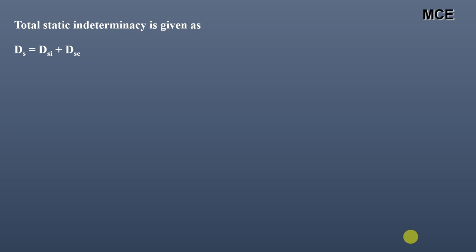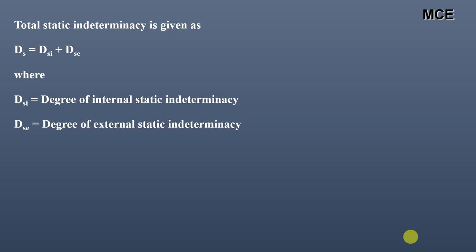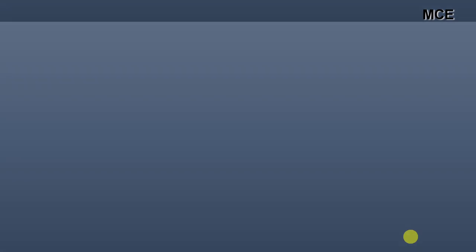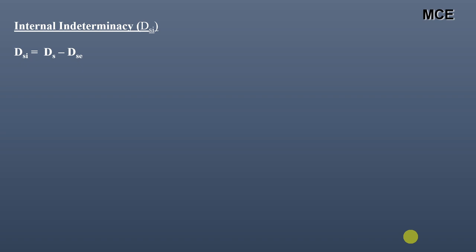Total static indeterminacy is given as ds = dsi + dse, where dsi is the degree of internal static indeterminacy and dse is the degree of external static indeterminacy. The value of external indeterminacy, dse, is given as the total number of support reactions minus the number of equilibrium equations available, which equals r minus 3. Internal indeterminacy, dsi, equals total indeterminacy minus external indeterminacy.